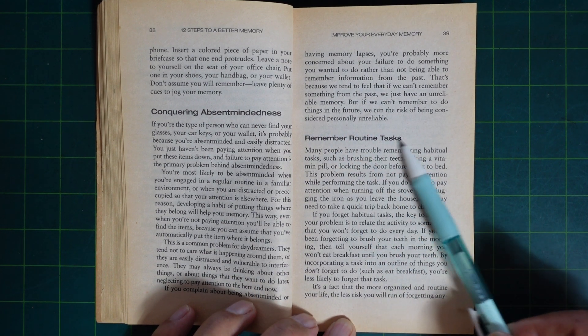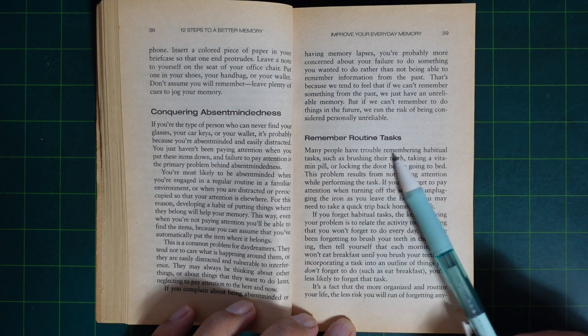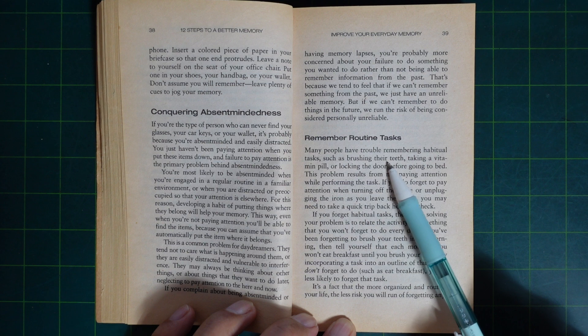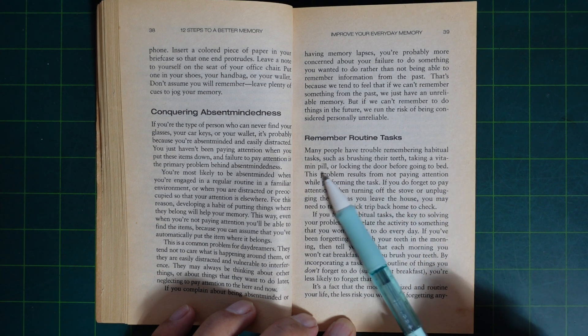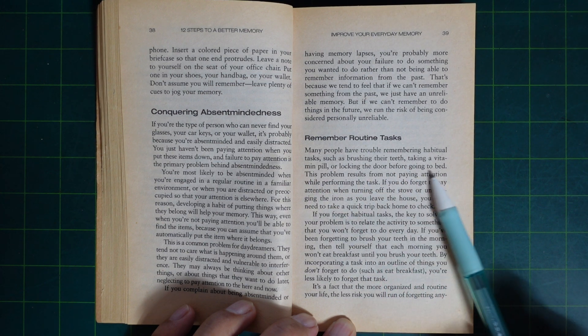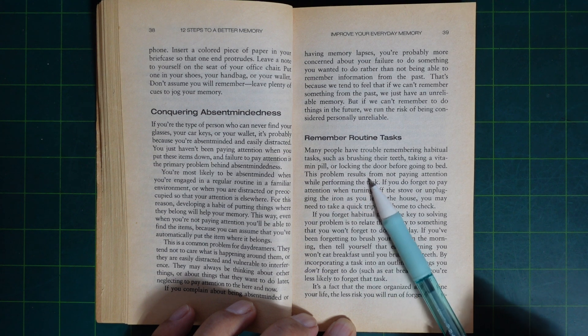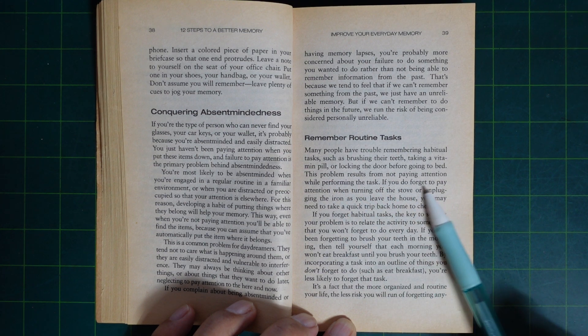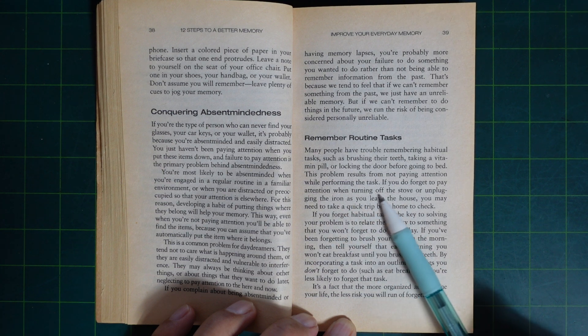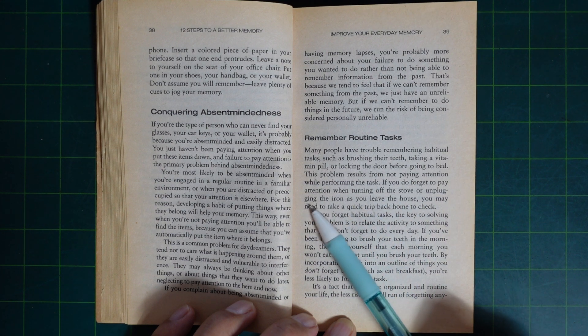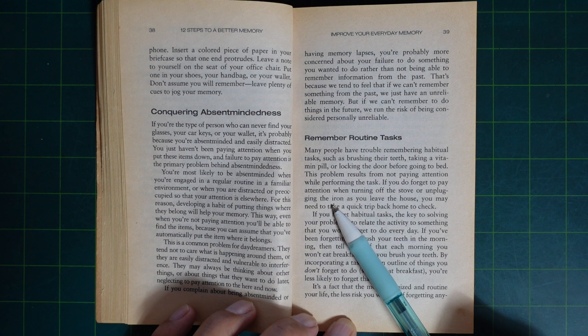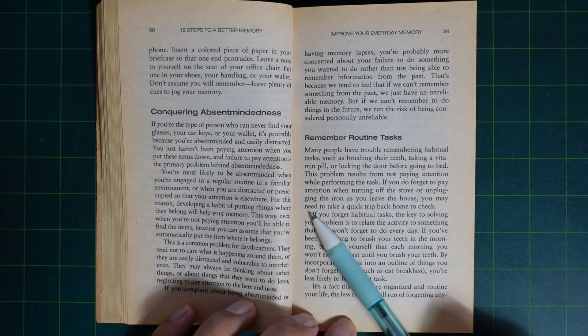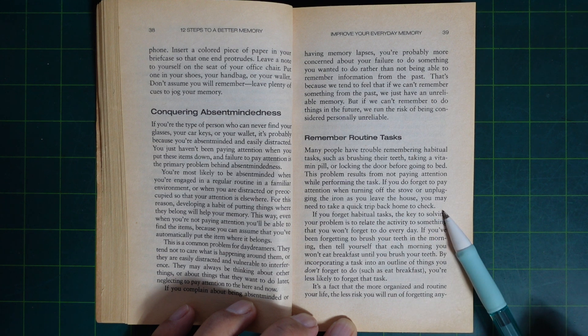Remember routine tasks. Many people have trouble remembering habitual tasks such as brushing their teeth, taking a vitamin pill, or locking the door before going to bed. The problem results from not paying attention while performing tasks. If you do forget to pay attention in turning off the stove or unplugging the iron as you leave the house, you may need to take a quick trip back home to check.